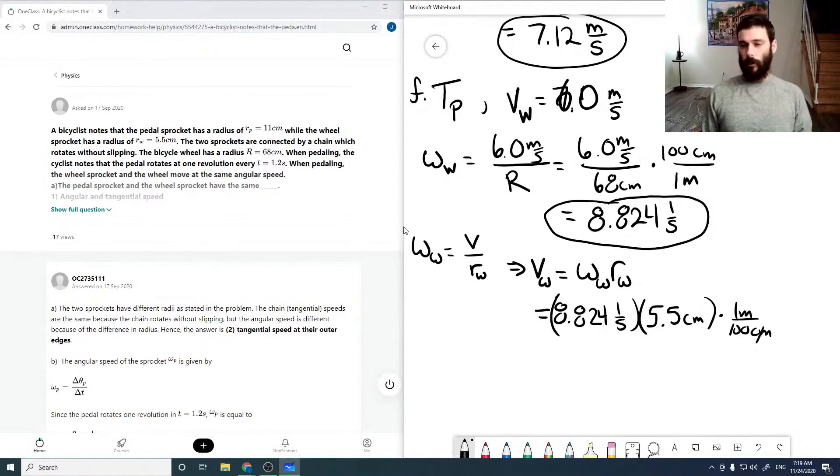The radius of the wheel sprocket is our 5.5 centimeters and throwing in appropriate unit conversions. In this case, really for no reason, but doing it anyway. Running this through our calculator, we get 0.4853 meters per second.